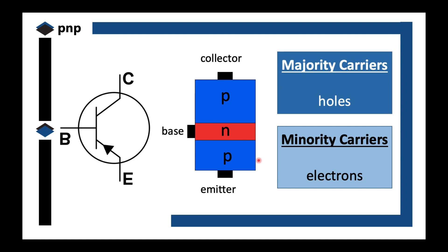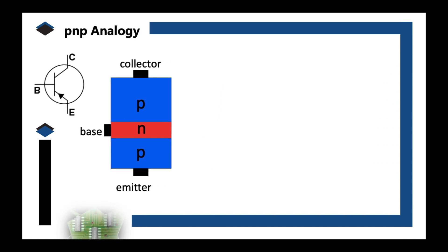Let's move to its analogy. Like earlier, right? PN, that's one diode. And another diode. So the upper part is the collector, the middle part is the base, and the lower part is the emitter.